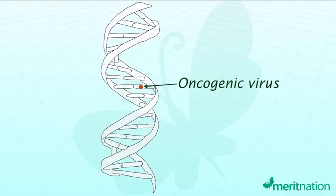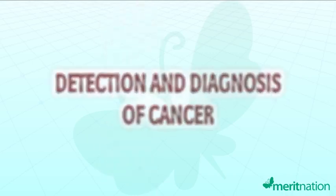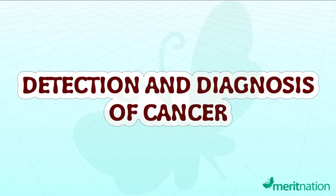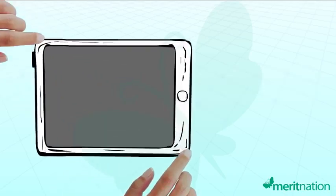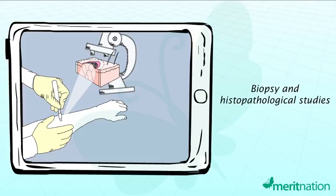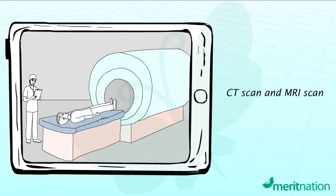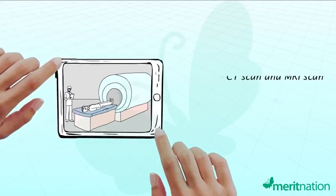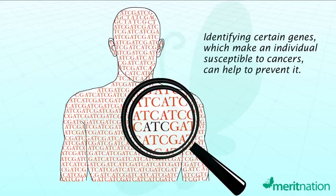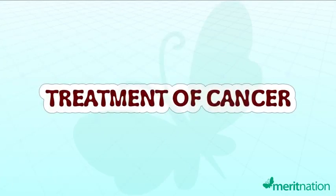Oncogenic, or cancer-causing, viruses have cancer-causing genes. The next topic is the detection and diagnosis of cancer. Detection is based on biopsy and histopathological studies. Radiography, CT scan, and MRI scan are methods of diagnosing cancer. Identifying certain genes which make an individual susceptible to cancers can also help to prevent it.